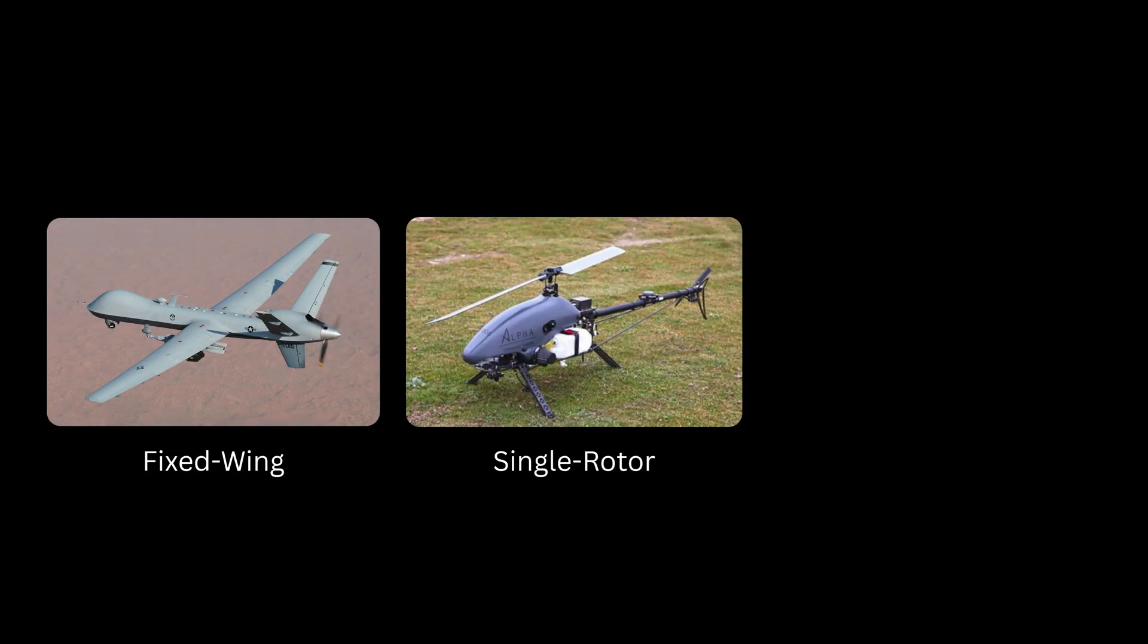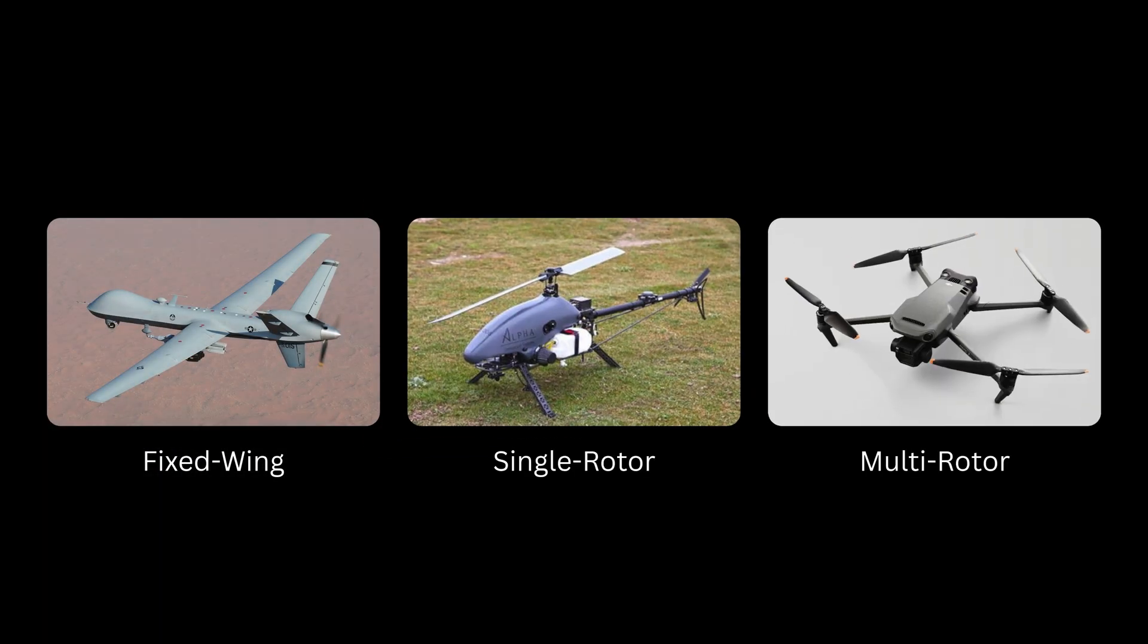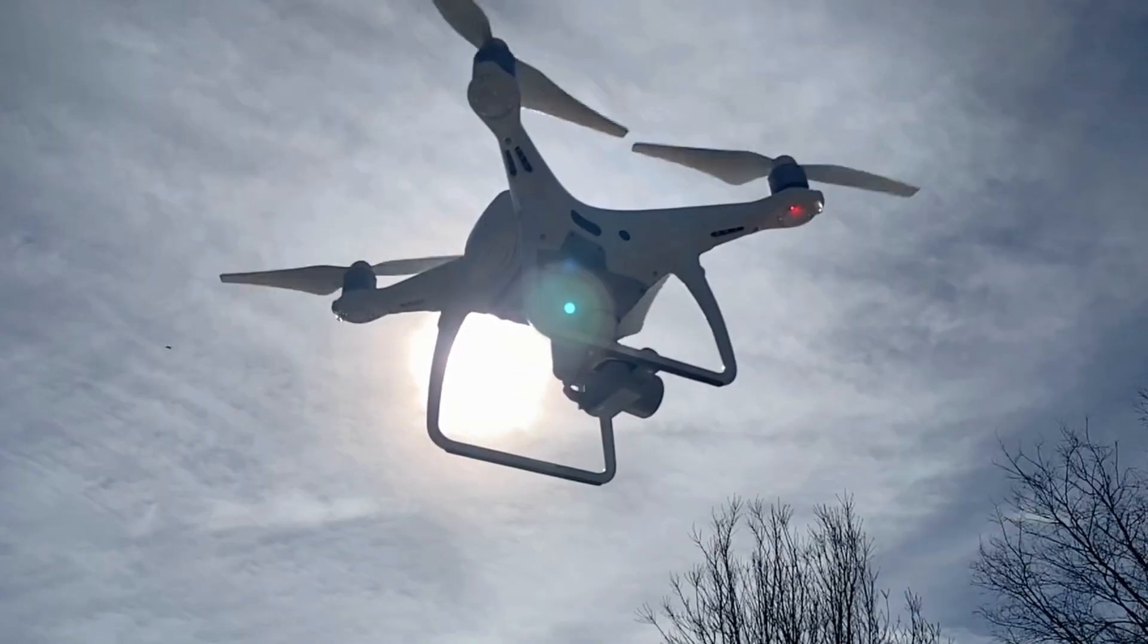There are several types of drones, including fixed-wing, single-rotor, and multi-rotor systems, such as the quadcopter. In this video, we'll explore the basic physics behind the quadcopter and how it is able to fly.